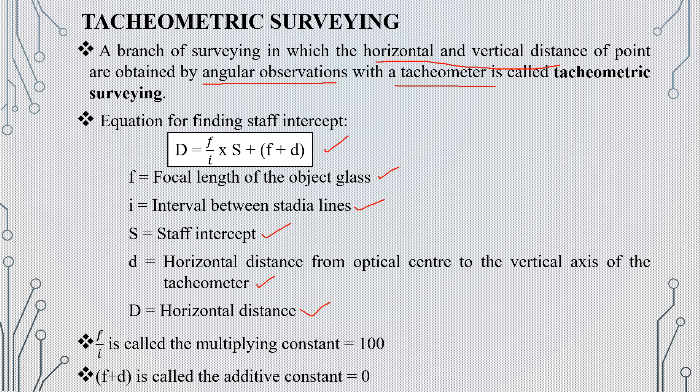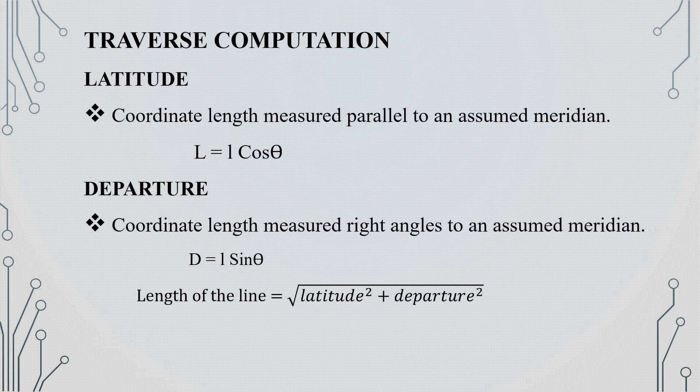If we call (f/i) the multiplying constant, its value is 100. The term (f + d) is the additive constant, and its value is 0. These two important constants are the multiplying constant and the additive constant.